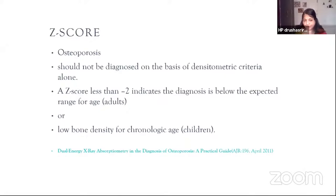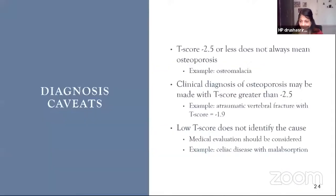Osteoporosis should not be diagnosed on the basis of Z-score densitometry criteria alone. A Z-score less than minus 2 indicates bone density below the expected range for age. In the clinic today, I saw someone who was just 20 years old who came with a T-score — her T-score is definitely going to be low because they're comparing it with a 30-year-old woman. There are many caveats: a T-score of less than minus 2.5 does not always mean osteoporosis — it could mean vitamin D deficiency and osteomalacia. A clinical diagnosis of osteoporosis can also be made with a T-score greater than minus 2.5, such as an atraumatic vertebral fracture. For example, celiac disease with malabsorption should be considered with a low T-score.